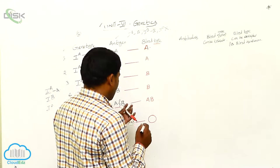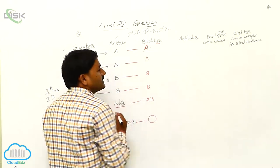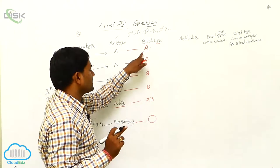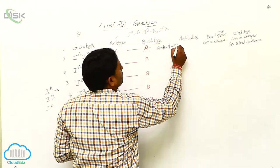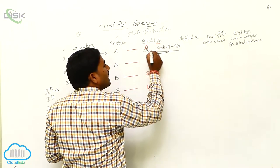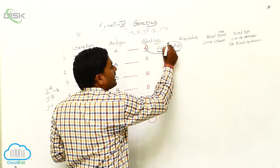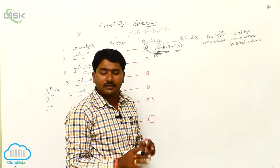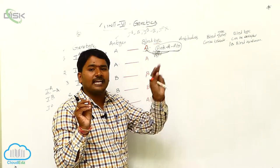Next, if you take the blood types and antibodies — when A antigen is present, anti-A antibody is not present. Why? Because if anti-A antibody were present in an A blood group individual, the A antigen and anti-A antibody being in the same blood would cause blood clumping, blood clotting, or agglutination, and the individual would die. So the simple rule is: when A antigen is present, anti-A antibody is not present.